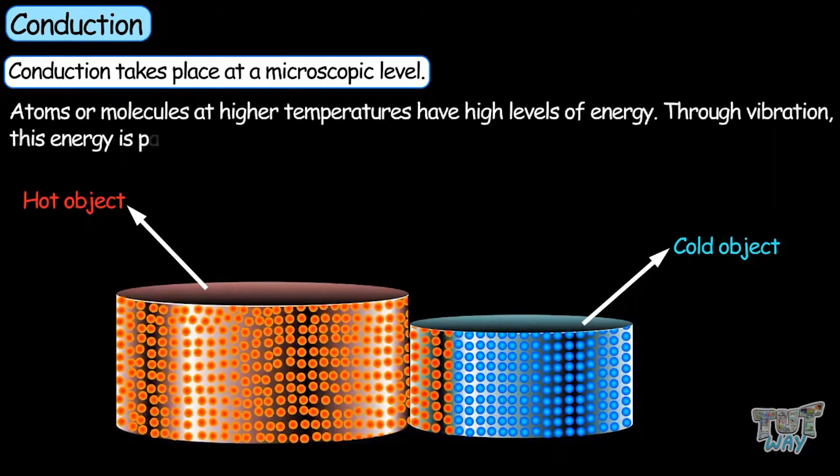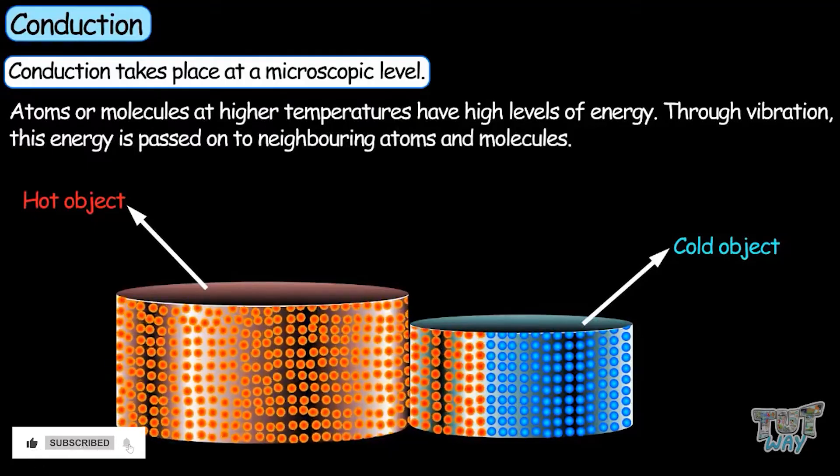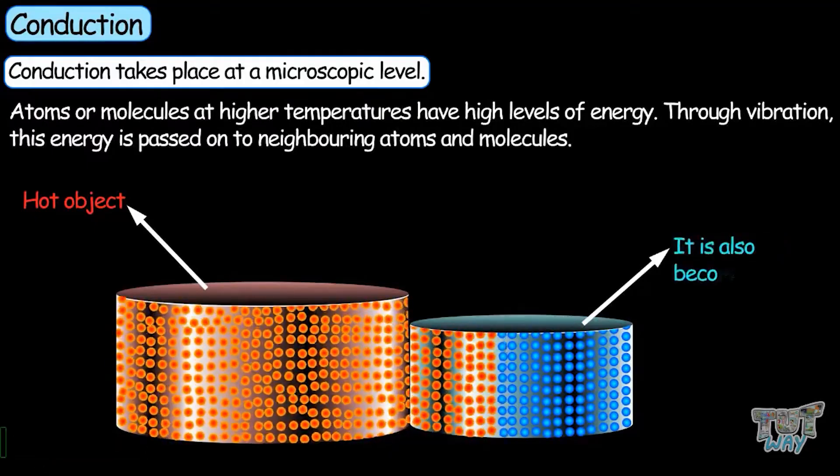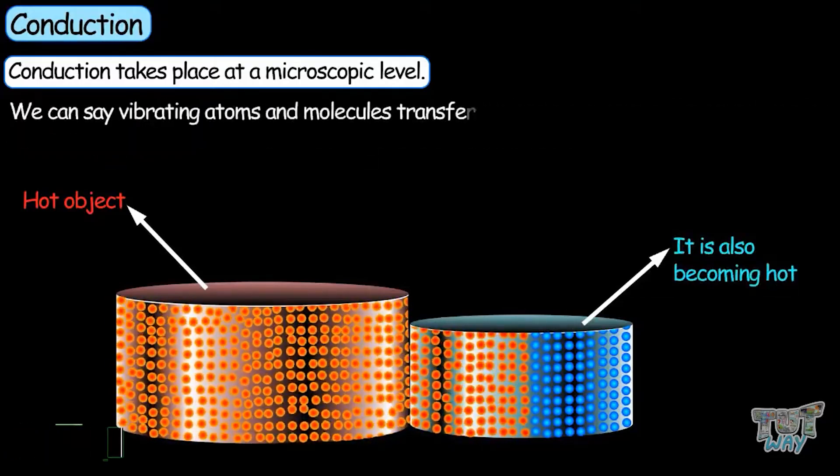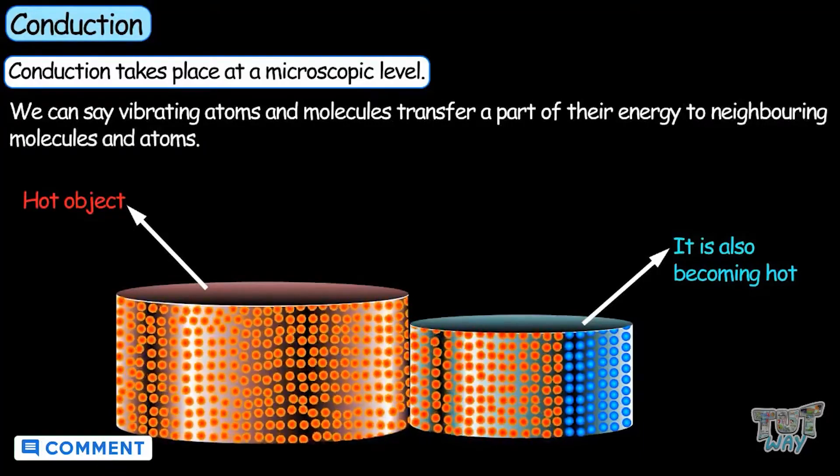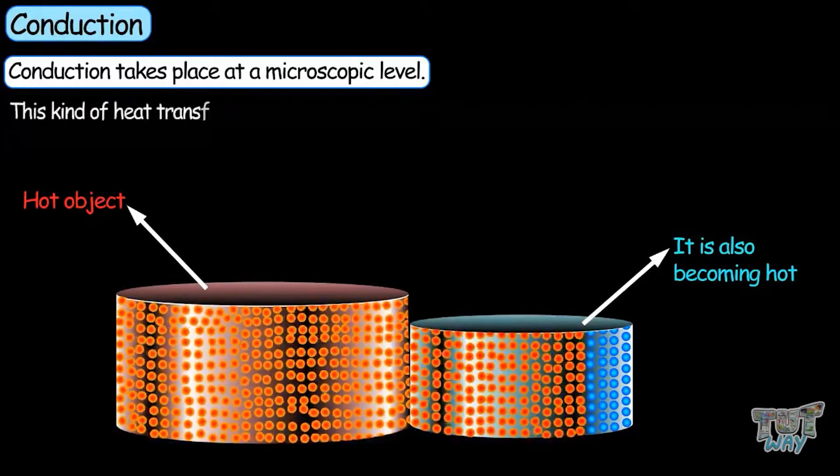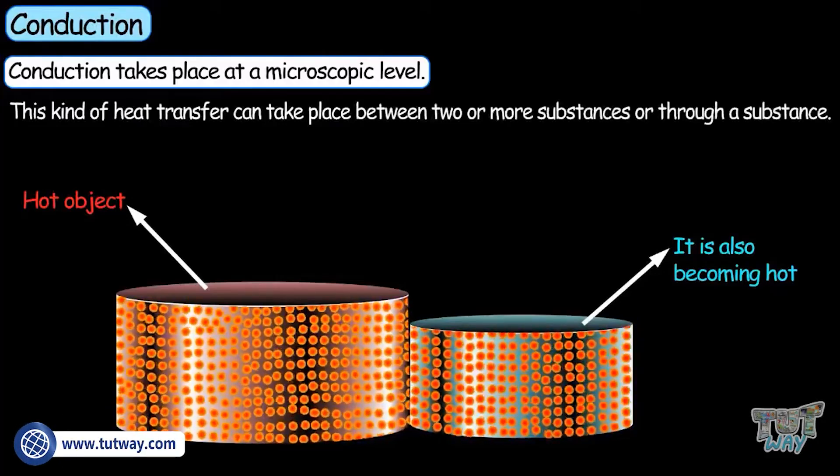Atoms or molecules at higher temperatures have high levels of energy. Through vibration, this energy is passed on to neighboring atoms and molecules. Vibrating atoms and molecules transfer a part of their energy to neighboring molecules and atoms. This kind of heat transfer can take place between two or more substances or throughout a substance.